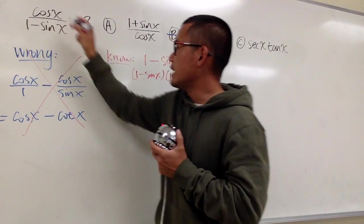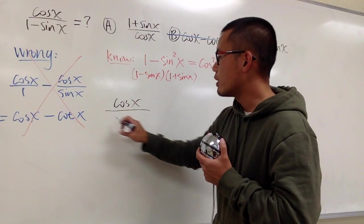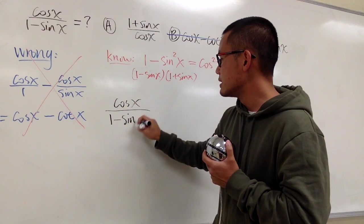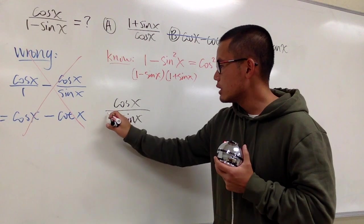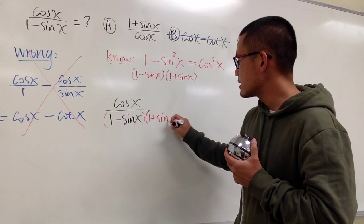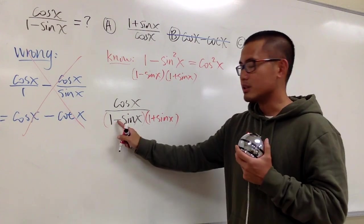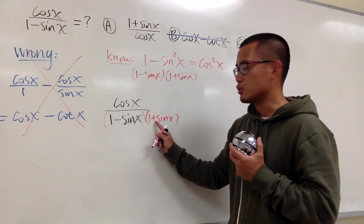So, let me write this down again. Cosine x on the top over 1 minus sine x. What we'll do is multiply the bottom by 1 plus sine x. This right here is called the conjugate of that. This was a minus, we'll just change this to plus.